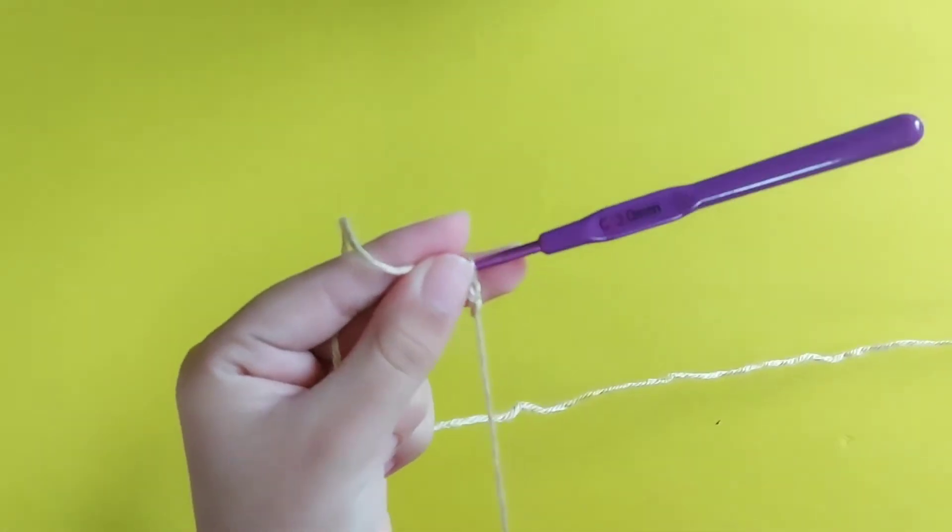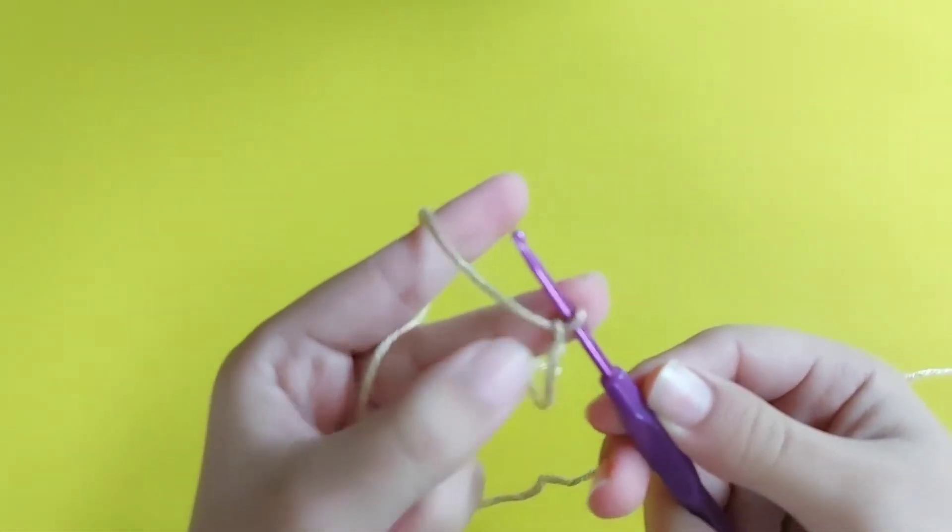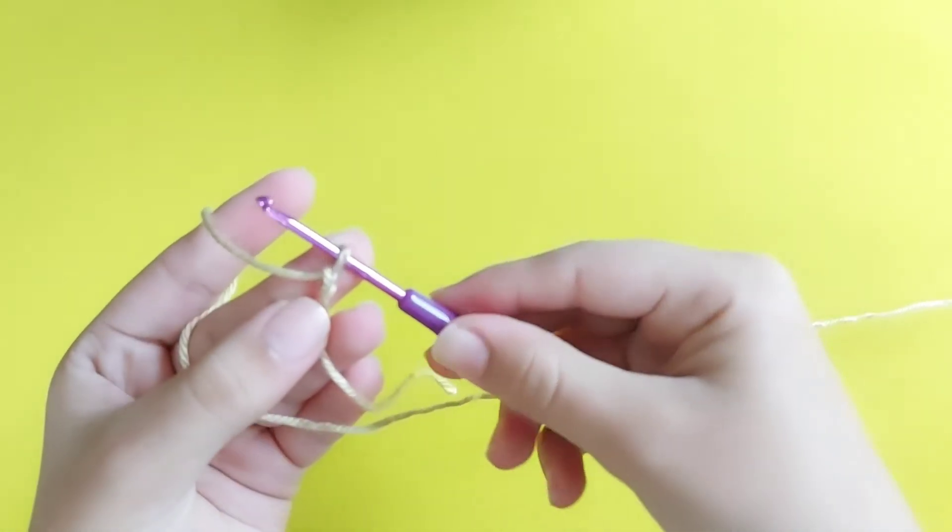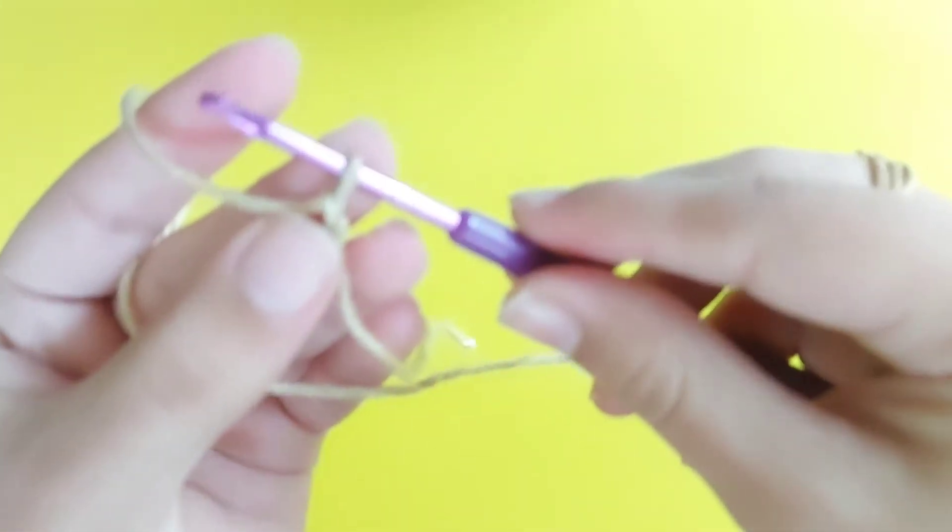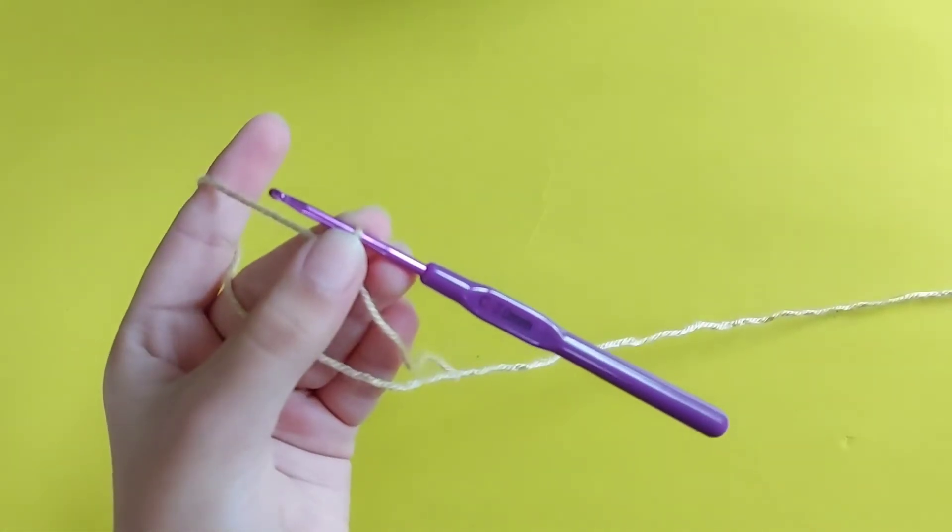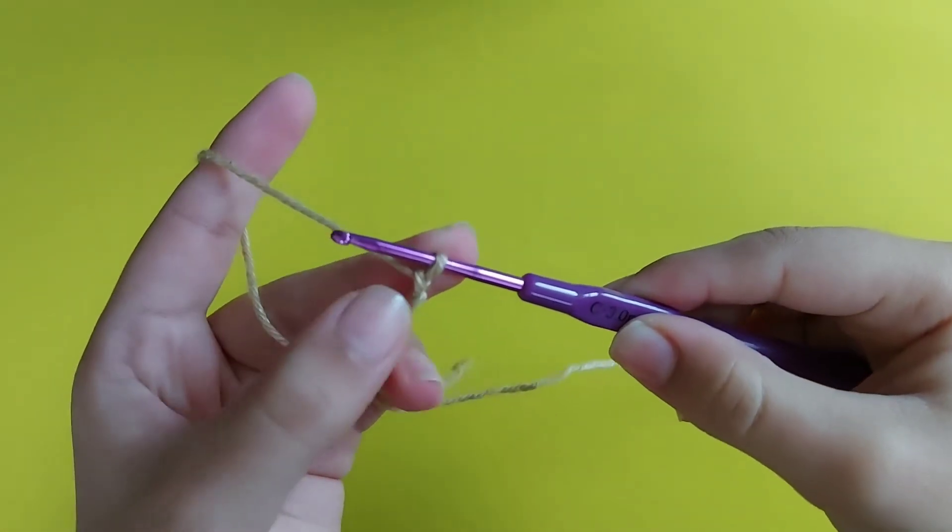And then you will start your basic chain. Now you can see your hook. There is a loop on it, right? See, let me focus this. So I was talking about this loop.